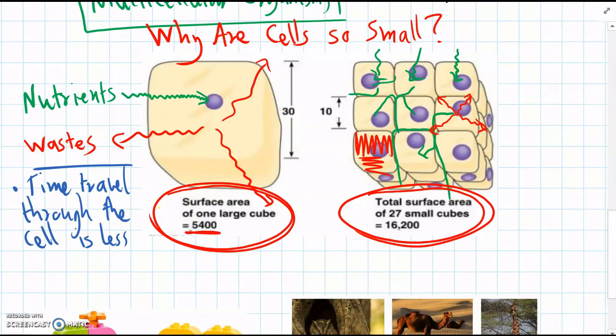And that lets nutrients and wastes easily go in and out. So small cells have a greater surface area.